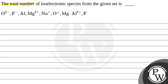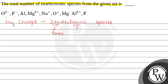Hello children, let's read this question. The total number of isoelectronic species from the given set is dash. So we have to tell the total number of isoelectronic species from these given species. The key concept of this question is isoelectronic species — 'iso' means same, and 'electronic' represents the electron. So isoelectronic species are those that have the same number of electrons.